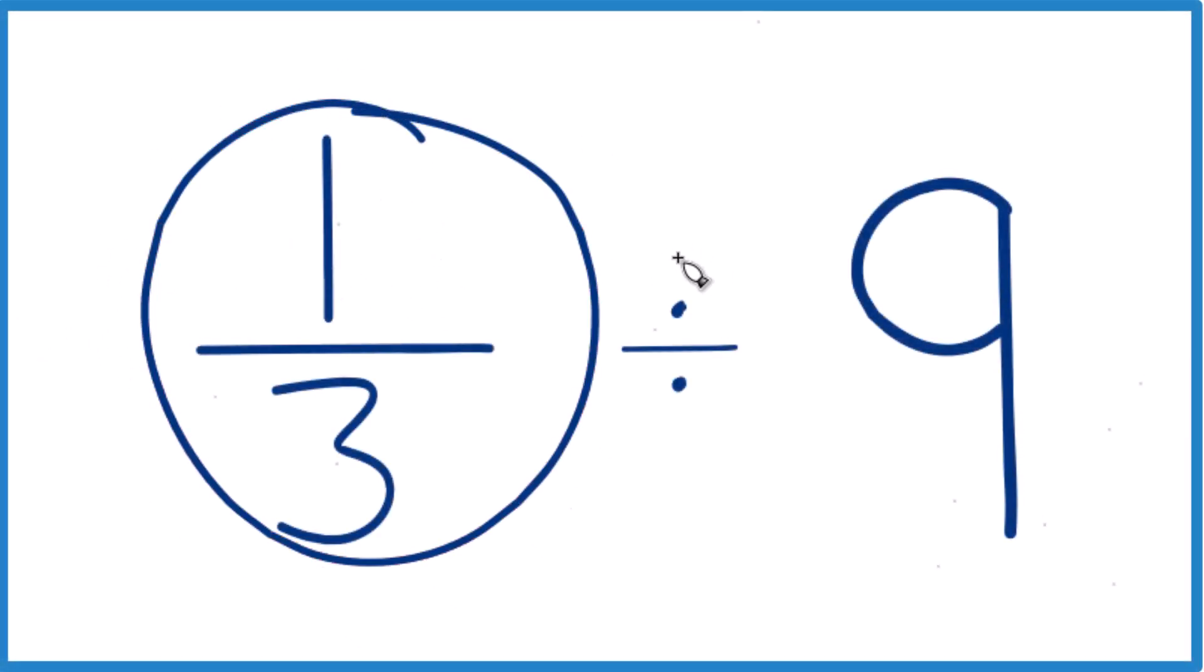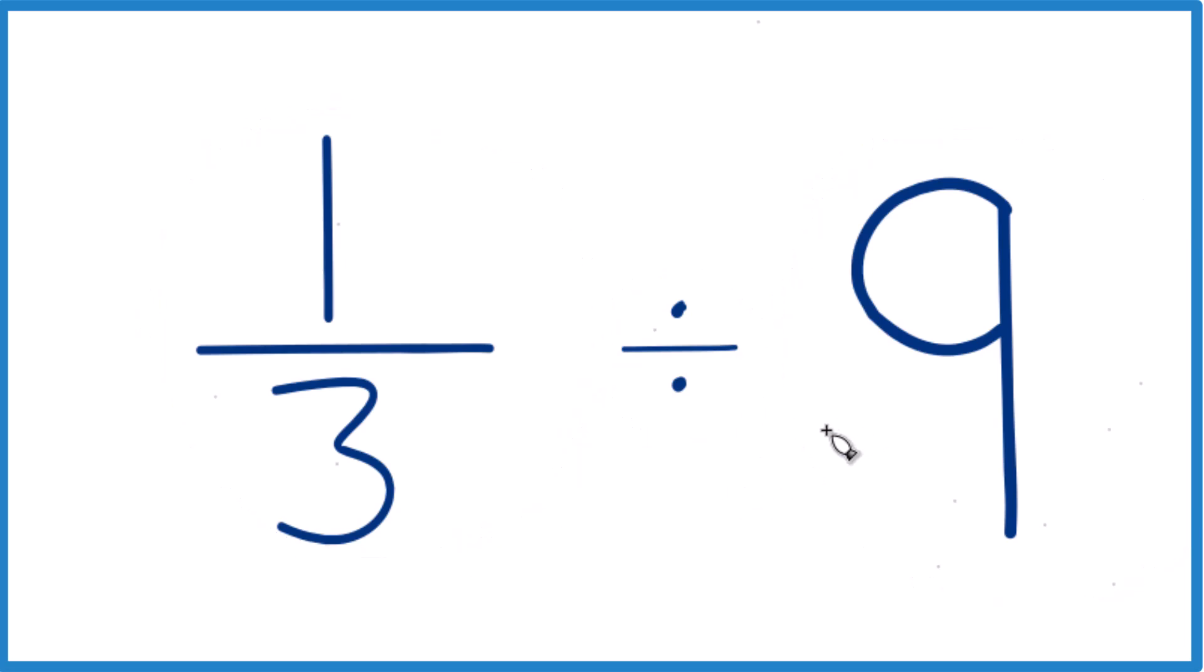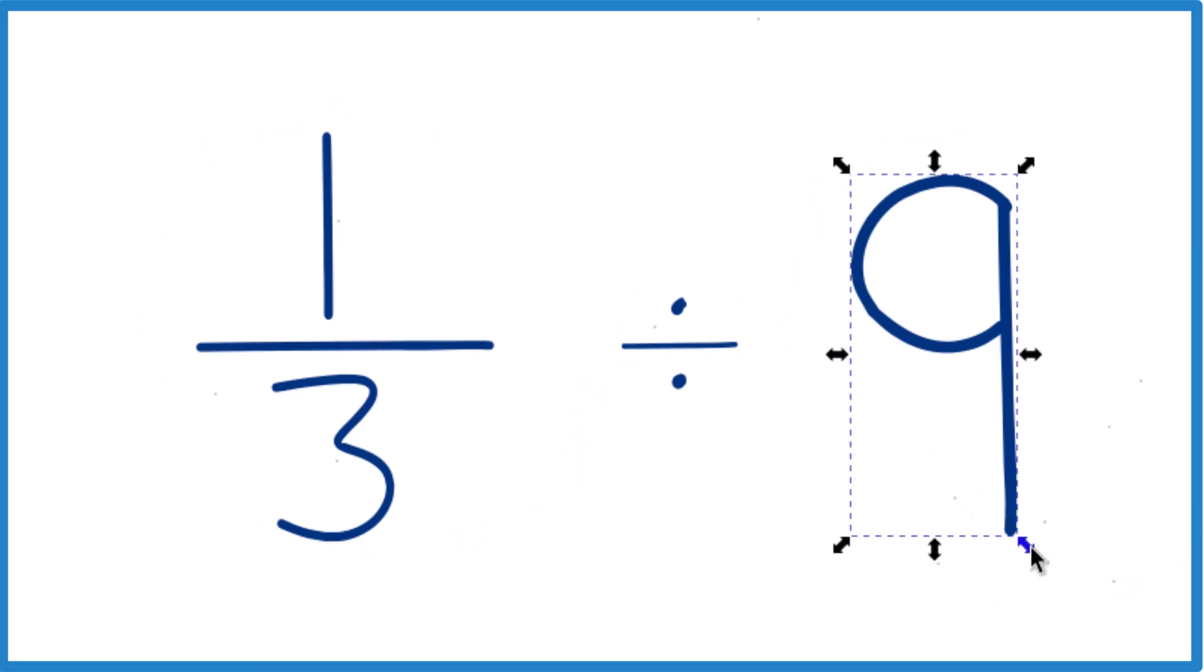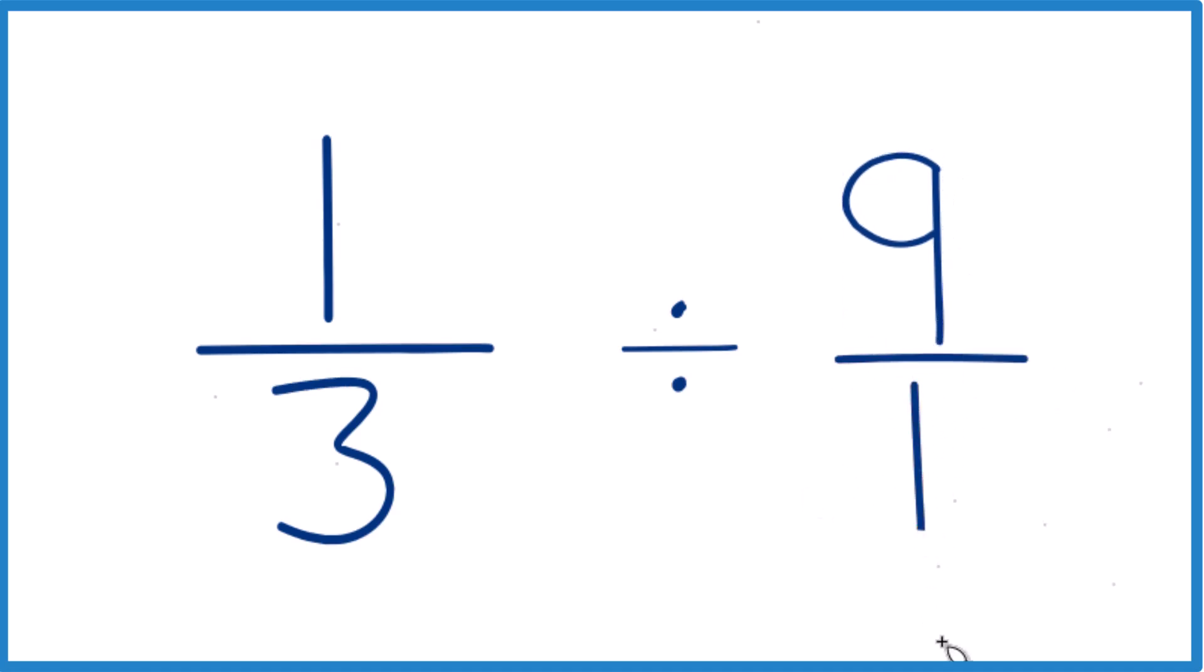Let's take one-third and divide it by nine. Here's how you can do that. Probably the easiest way is to take this nine here, and instead of nine, let's call this nine over one. Because nine divided by one is still nine, but now everything lines up nice.